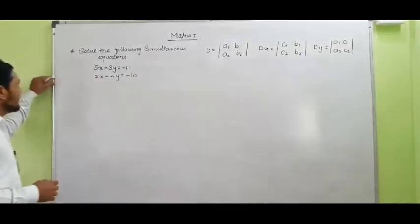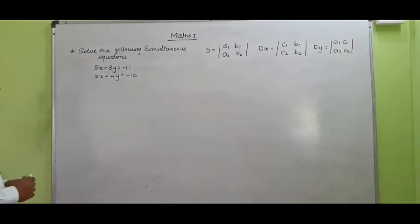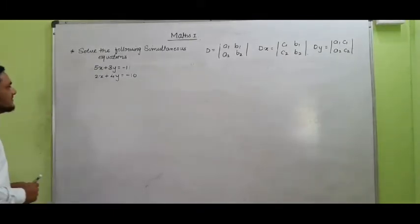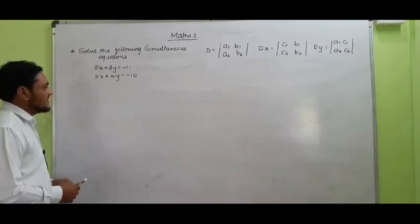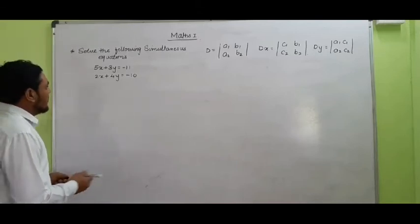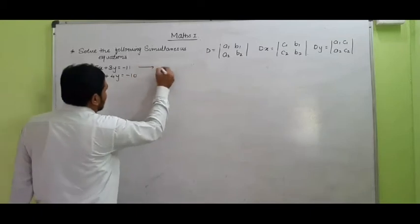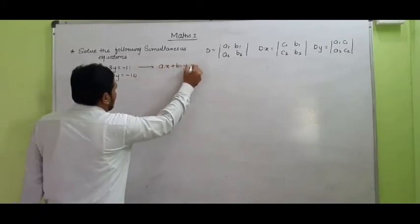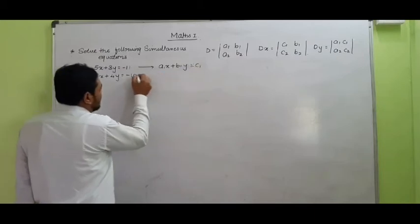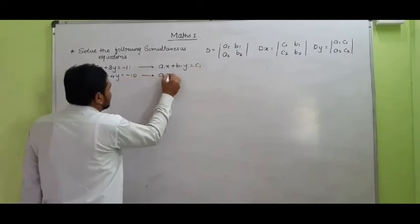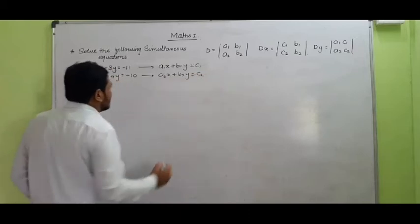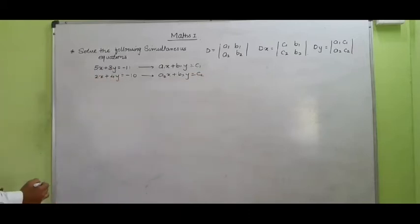So here one example is given to us: solve the following simultaneous equation. The first equation is 5X plus 3Y equal to minus 11, and 2X plus 4Y equal to minus 10. Let us compare these equations with the standard form A1X plus B1Y equal to C1, and A2X plus B2Y equal to C2.